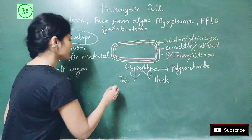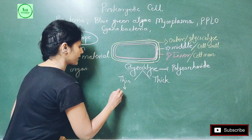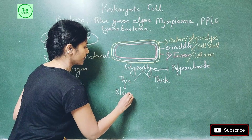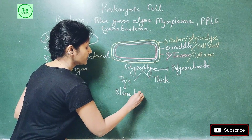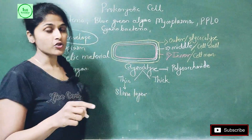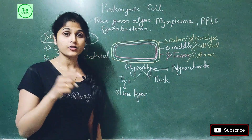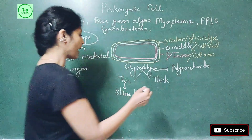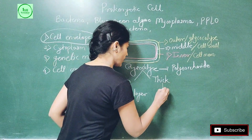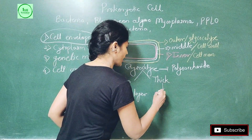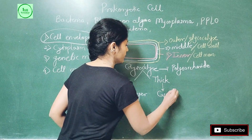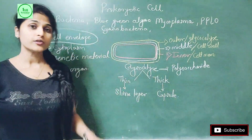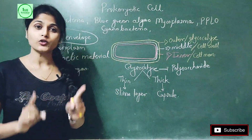If the glycocalyx layer is thin, it is called the slime layer. If it is thick, it is called the capsule. Note that these distinctions — slime layer versus capsule — are not in the HSC syllabus; they are from the MCRT. This is all about glycocalyx: its composition (polysaccharide), its role (protection and adhesion), and the terms for thin versus thick forms.